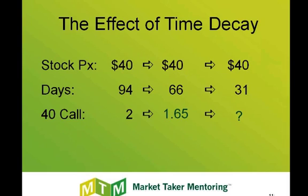Now let's say another month passes and the stock incidentally is still trading at $40 a share — maybe it went higher or lower, but it's back at $40 a share, nothing else changes. What's the new price of my 40 strike call? Well, it should be about $1.10.